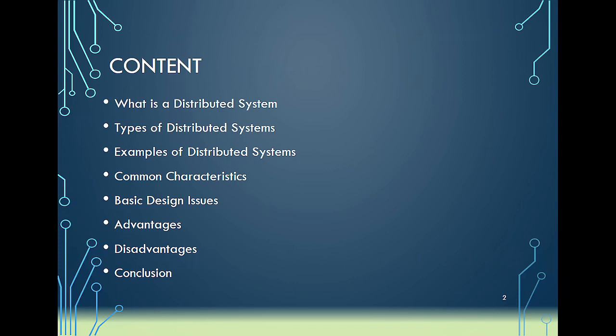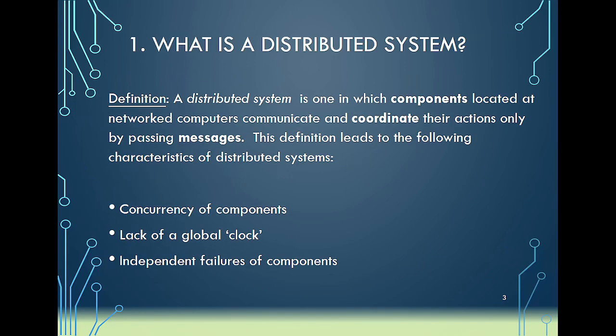We're going to look at distributed systems, and these are the contents: we are going to understand what a distributed system is, look at the various types of distributed systems — even around you there may be a distributed system you're using without your knowledge. We'll give examples, identify common characteristics, look at design issues, and mention the advantages and disadvantages.